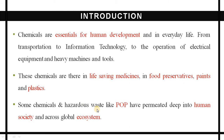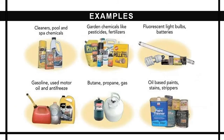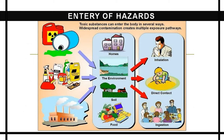Some chemicals and hazardous waste like POPs have a deep impact on human society and on the global system. Here you can see some examples of chemicals which are used by us in our daily life.